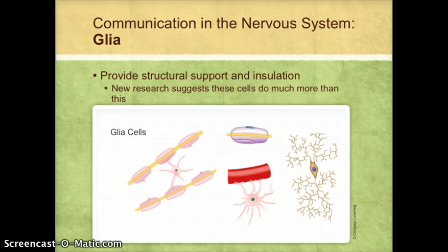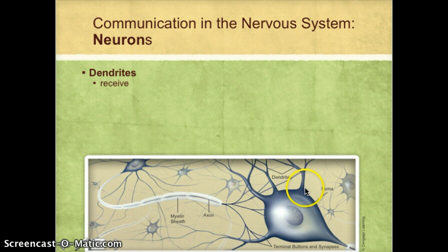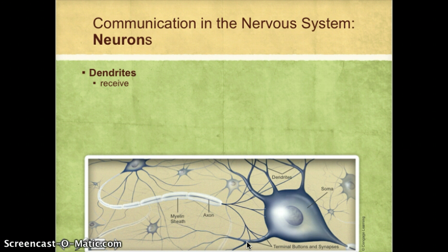The neurons are responsible for sending and receiving information. They are the primary communicators in the nervous system and are made up of several different parts. The first part we're going to talk about are the dendrites — the branch-like structures coming off of the cell body. These structures are primarily responsible for receiving information.